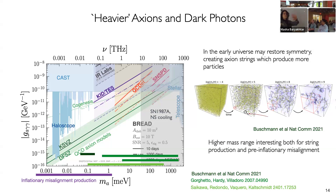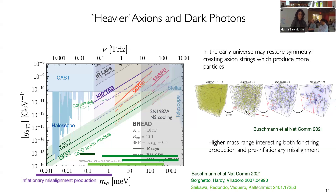This just changes your prediction for how much dark matter there is for a particular axion mass. Please feel free to ask questions during the talk as well as after.